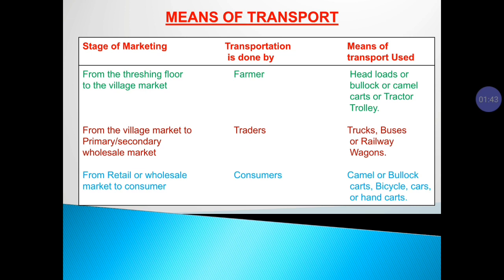From the retail or wholesale market to the consumer, transportation is done by the consumers themselves. Means of transport used are camel or bullock carts, bicycle, cars, and hand carts. This is some information regarding means of transport.